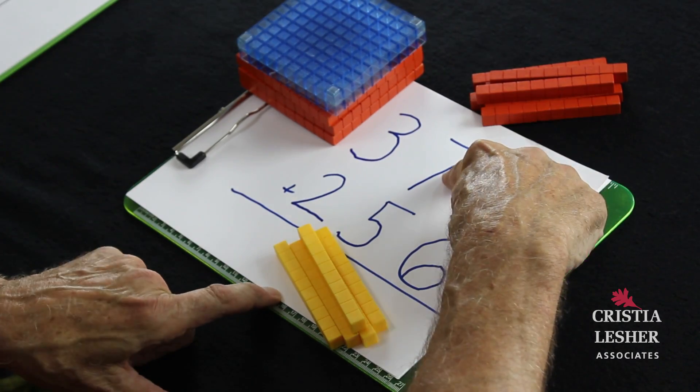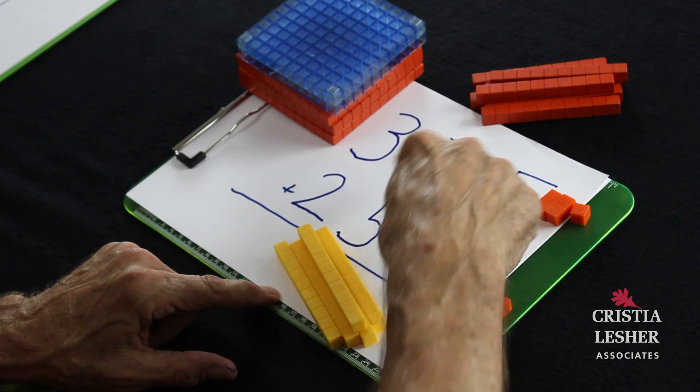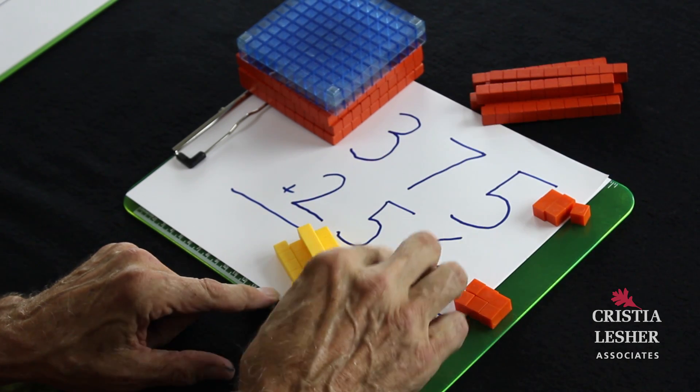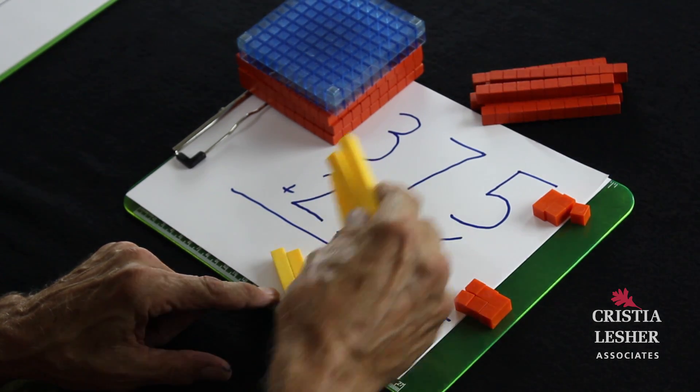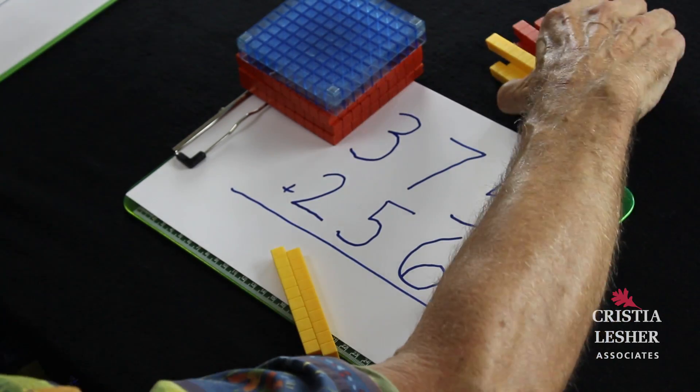When I look at my tens column I see that I have enough tens to make another 100. I'm going to take 30 from my 50 and put it with the 70 to make another 100, and I will actually trade those in for another 100.